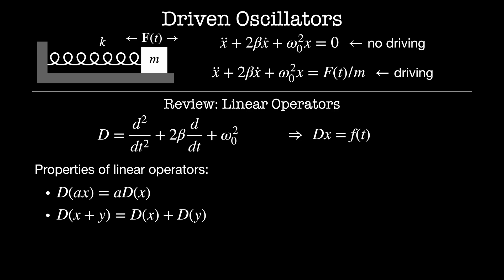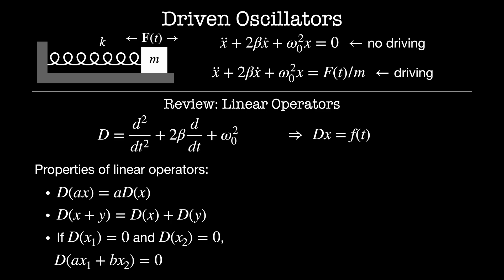Combining these two properties we arrive at superposition, which is used in virtually all fields of physics. Imagine I have two solutions x1 and x2 that both solve D of x equals zero. We can use this to construct a more general solution: D acting on a times x1 plus b times x2 equals zero, and this solution also solves our original equation. Specific solutions in this superposition are weighted sums of all possible linearly independent solutions.